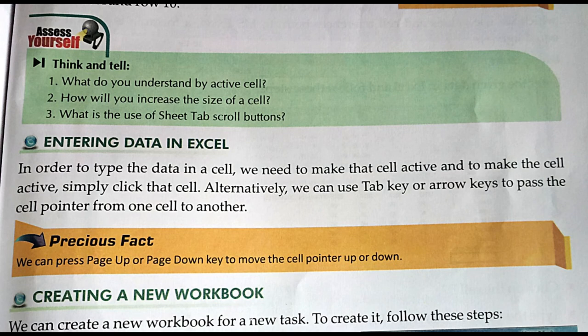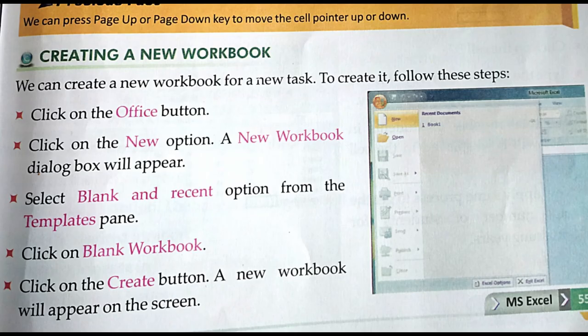We can enter data in Excel. When we see the cell pointer, we can directly type text, a number, or a date, and automatically it will take the data and display it on the screen. To create a new workbook in Excel, click on the Office button — that is the round button at the top — then it will show the New option. Select the new workbook from the Blank and Recent option in the Template panel, then click on Blank Workbook, then click on the Create button to create a new workbook.